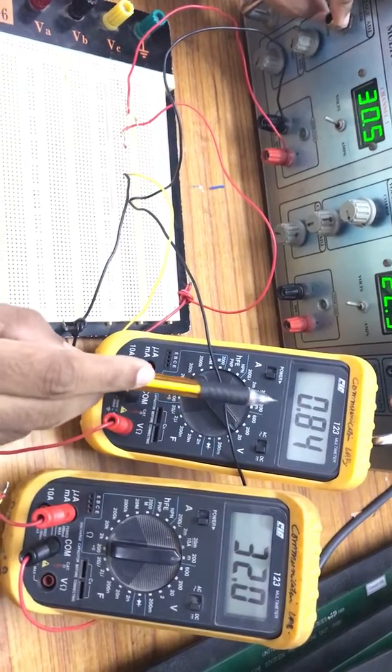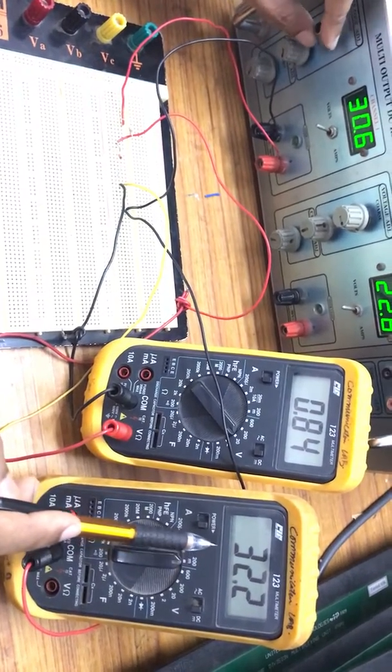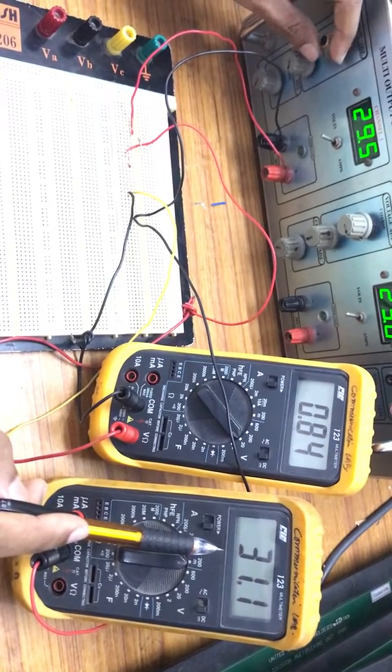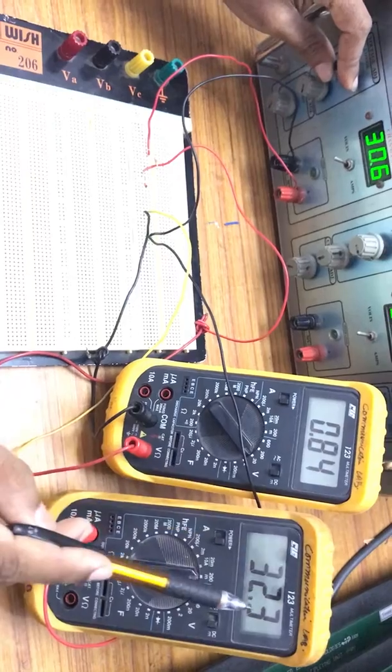But in the Zener diode, because of heavy doping, at 0.84 volts, you are going to get maximum current. This is about forward bias. When you compare the forward bias with a normal PN junction diode, at 0.84 volts you are getting maximum current.